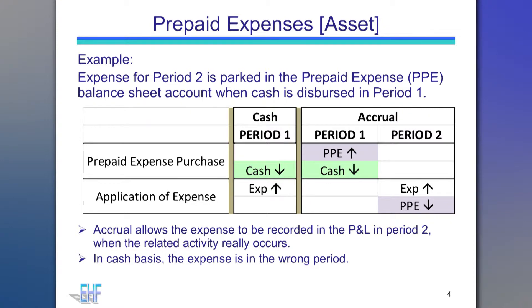Next, we'll talk about prepaid expenses, which is also a balance sheet asset account. Expenses incurred during period 1 may pertain to period 2. Typical prepaid expenses might include things your organization purchased for future use, such as merchandise inventories, supplies, brochures promoting events that will happen next year, or payments made for goods or services not yet received or used, such as insurance premiums that could be refunded if canceled, or deposits for a future conference. Using accrual accounting, these expenses are held in the prepaid expense balance sheet account. The prepaid assets are reduced or converted to expenses at the right time via an adjusting journal entry. Cash is not affected.